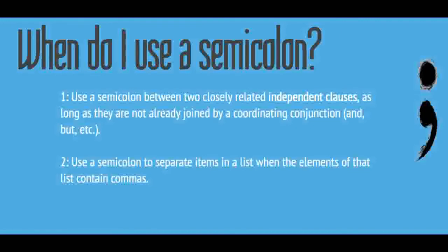First, you're going to use a semicolon between two closely related independent clauses, as long as they're not already joined by a coordinating conjunction like and, but, so, etc. However, you're also going to use a semicolon to separate items in a list when the elements of that list contain commas, because the commas can get confusing, so we put semicolons in to make it clearer.